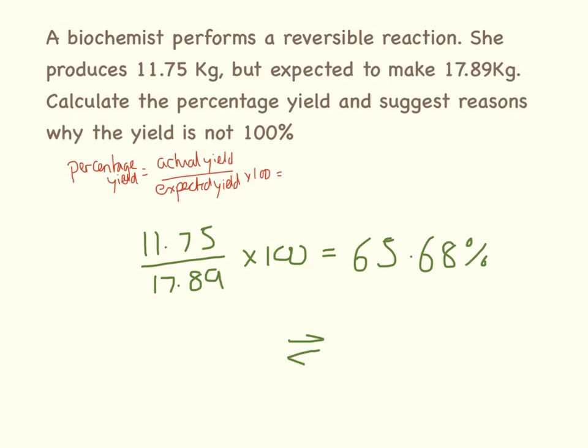This question also asks to suggest reasons why the yield isn't 100%, and they've told us it's a reversible reaction. This is the symbol for a reversible reaction. What it means is as things are being made, they're also being unmade. The two reactions are happening at exactly the same time. So with a reversible reaction, we're never going to get 100% yield because stuff is always being unmade.